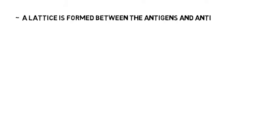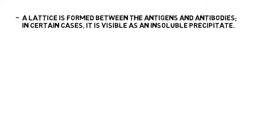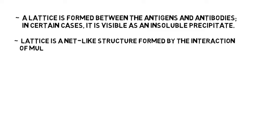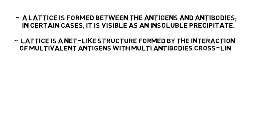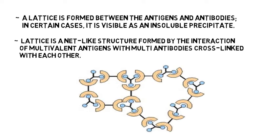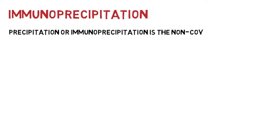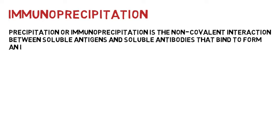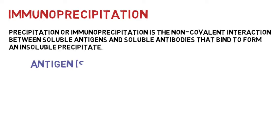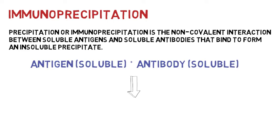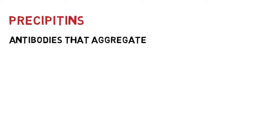A lattice is formed between the antigens and antibodies. In certain cases, it is visible as an insoluble precipitate. Lattice is a net-like structure formed by the interaction of multi-valent antigens with multiple antibodies that are cross-linked with each other. Precipitation, or immunoprecipitation, is a non-covalent interaction between soluble antigens and soluble antibodies that bind to form an insoluble complex that precipitates out of solution. The antibodies responsible for this are called precipitins.